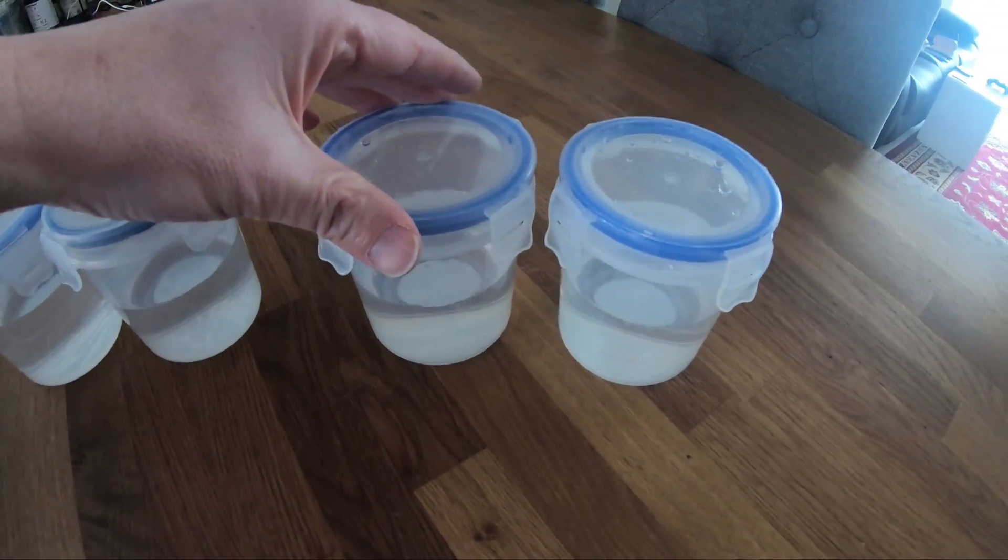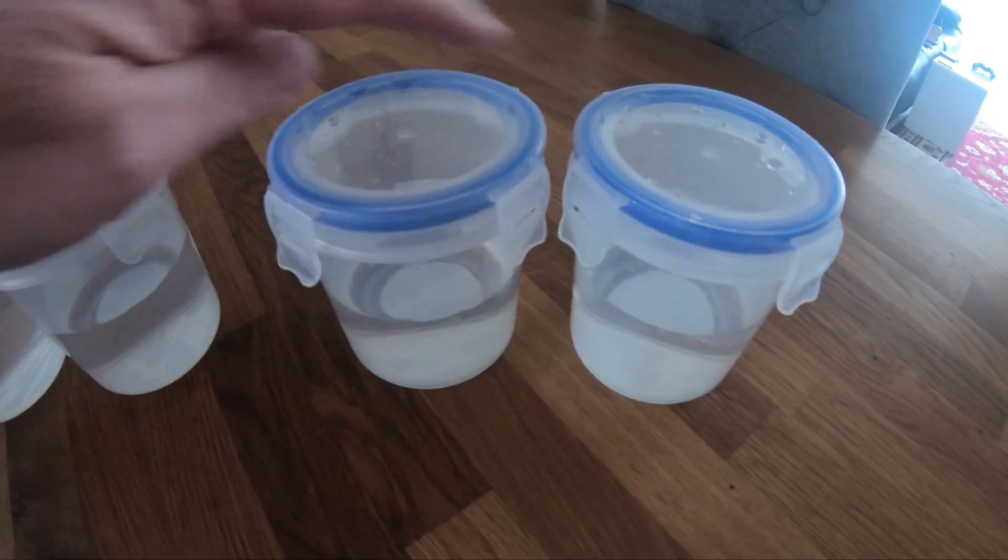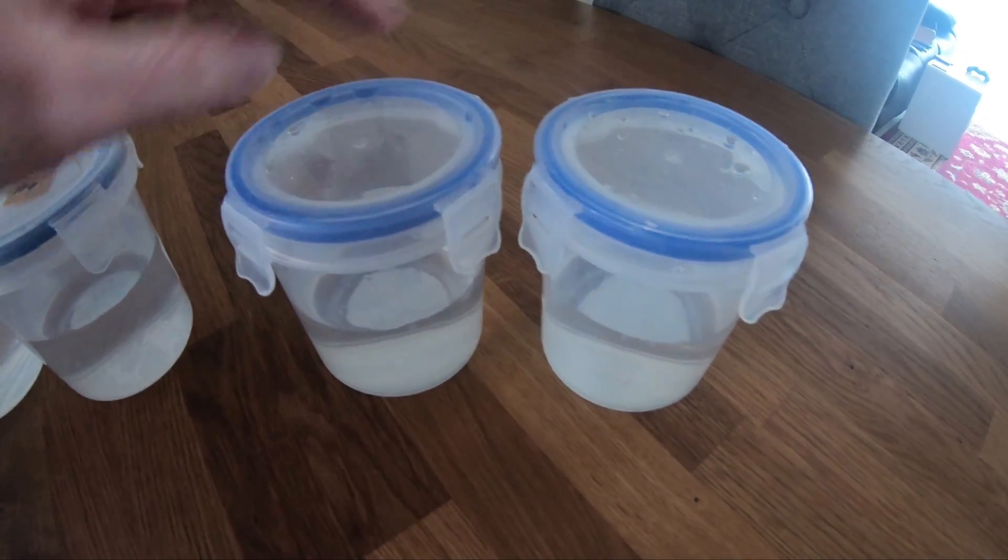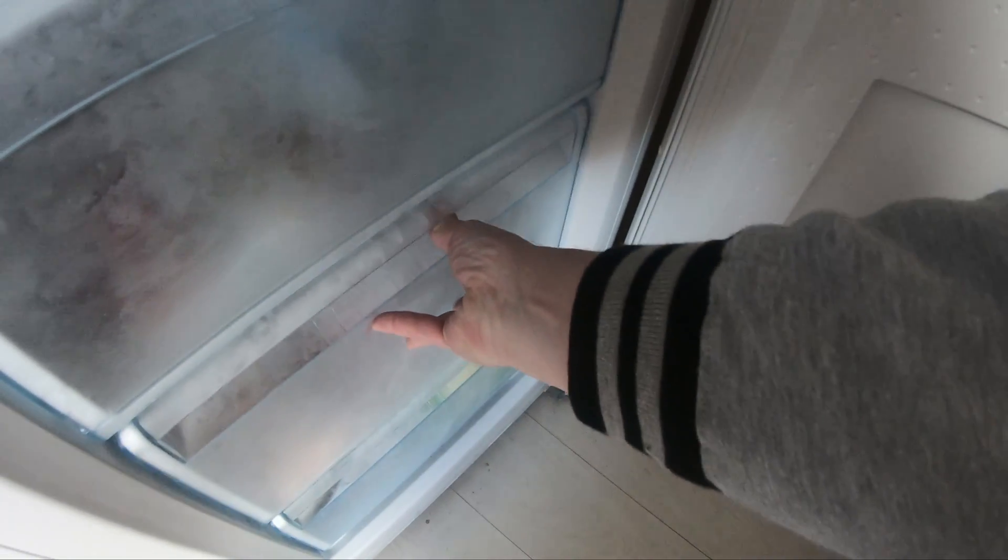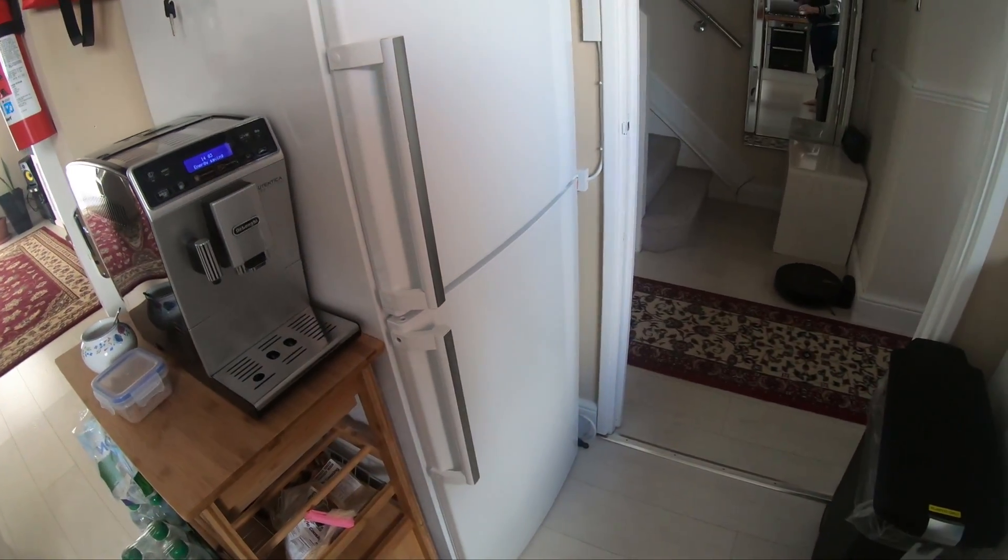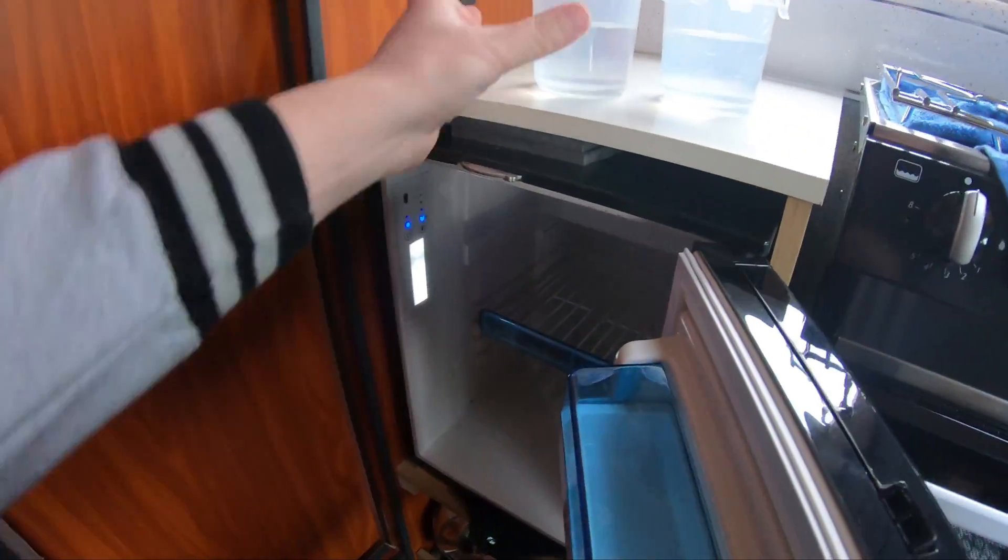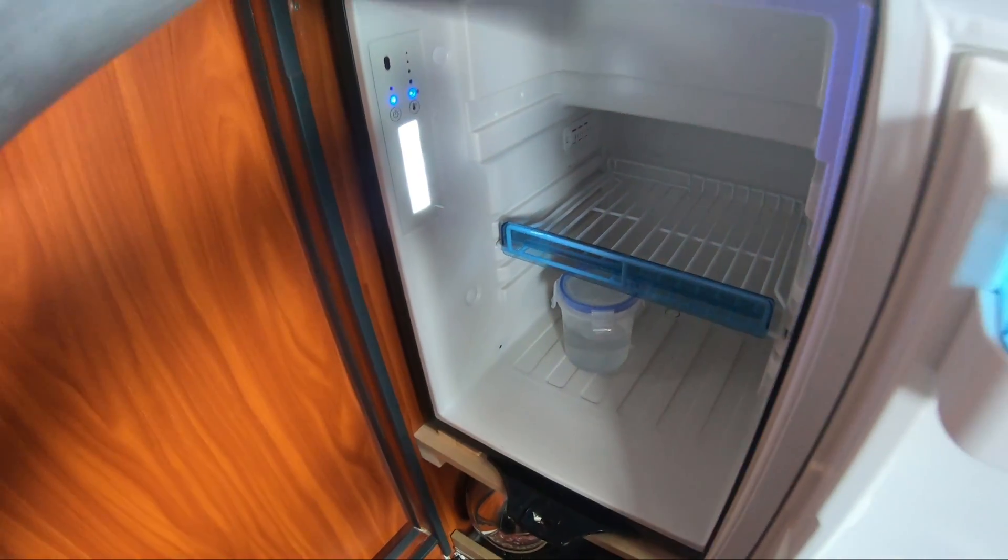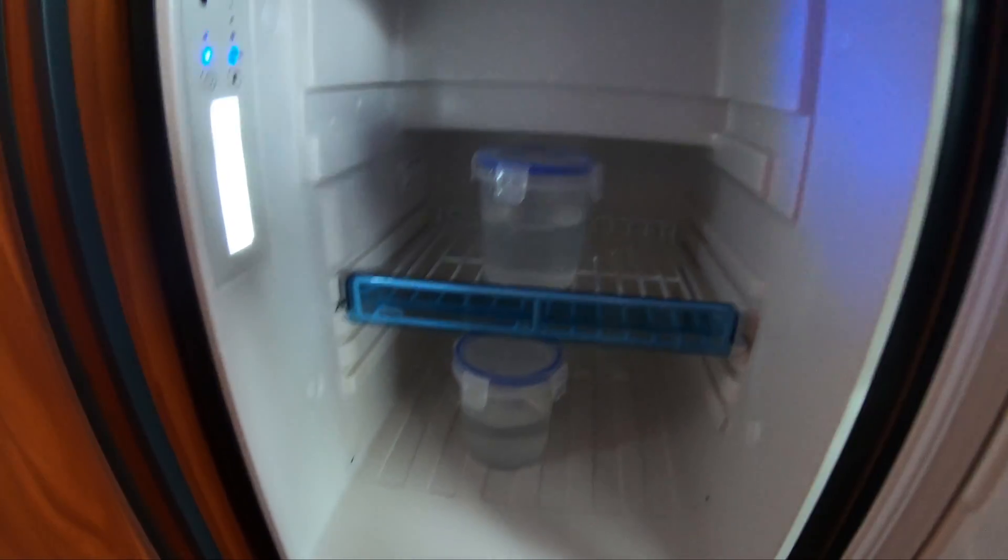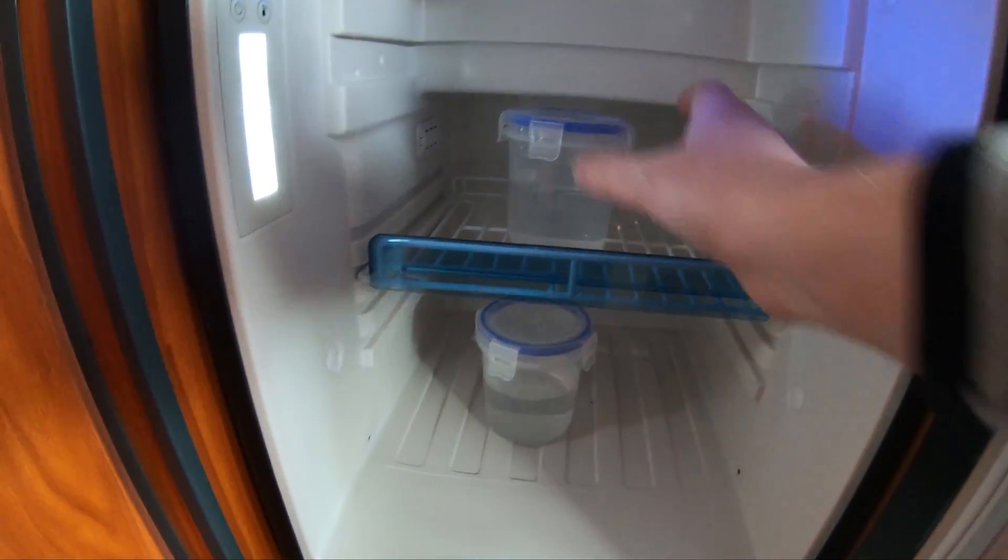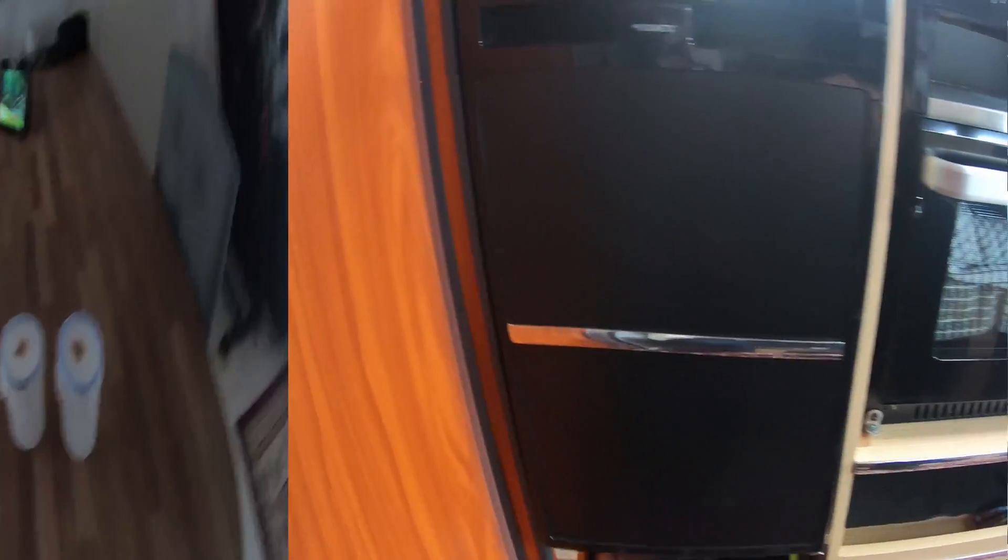And these two are going to go in the freezer right now as the van cools down to see whether or not the van freezer itself actually can freeze these. Those are going into my freezer at home and hopefully they'll be frozen solid by tomorrow. These two are going into the fridge freezer in the van. I'm going to put them on two different levels to see what level of freeze these things produce overnight.